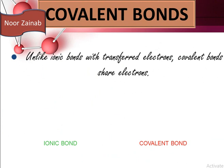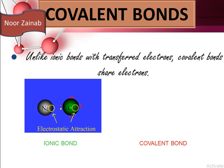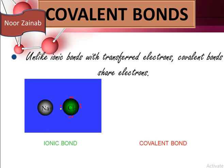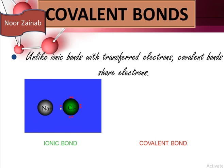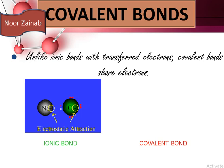Unlike ionic bonds which transfer electrons, covalent bonds share electrons. In ionic bonding, the sodium atom loses its electron and becomes a positive ion, whereas the chlorine atom gains the electron and becomes negatively charged. Due to electrostatic attraction between the positively charged sodium and negatively charged chlorine, the opposites attract and an ionic bond is formed, producing a neutral sodium chloride molecule.